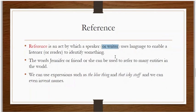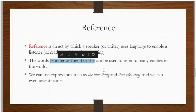The words Jennifer, friend, or she can be used to refer to many entities in the world. All of them are references. As I said, all the names which we have, those are references.